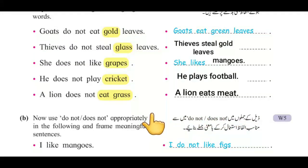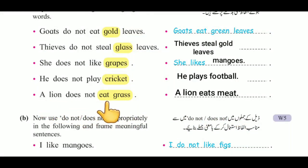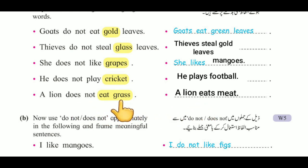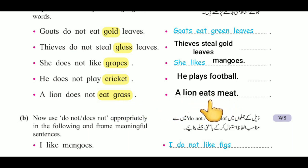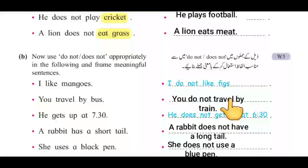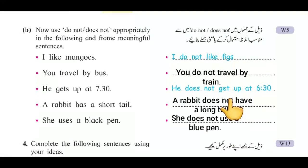Fifth: 'A lion does not eat grass' — we removed 'does not,' changed 'eat' to 'eats,' and replaced 'grass' with 'meat': 'A lion eats meat.' اس طریقے سے یہ لکھا۔ Now let's look at question B.